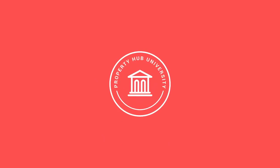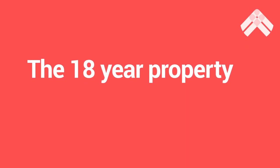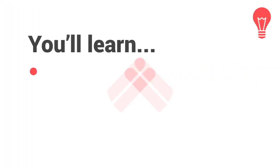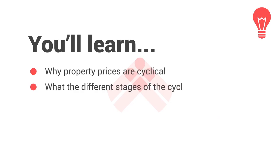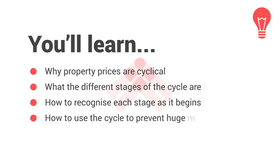Hello and welcome to this Property Hub University course. I'm Rob B and I'm joined by Rob D and we're going to look at the 18-year property cycle and explain exactly what it is and how you can use it to make better investment decisions. We're going to look at why property prices are cyclical, the different stages of the cycle, how to recognise each stage as it begins — which is really powerful — and how to use the cycle to avoid expensive mistakes and generate huge wins.